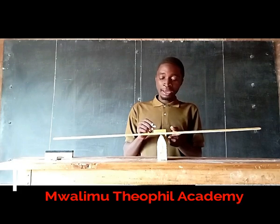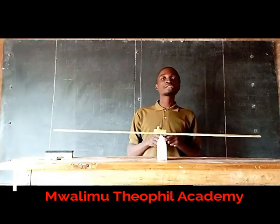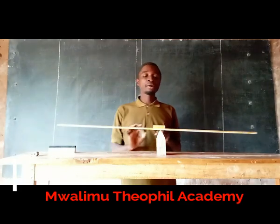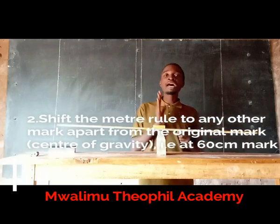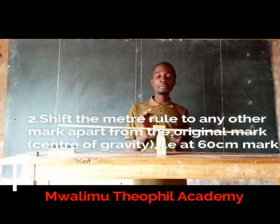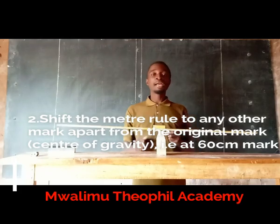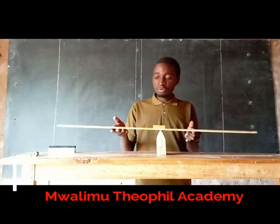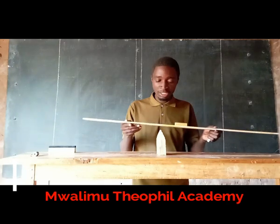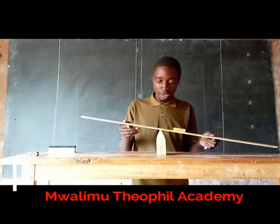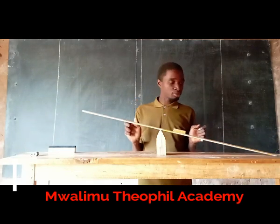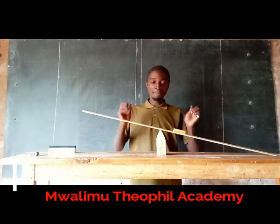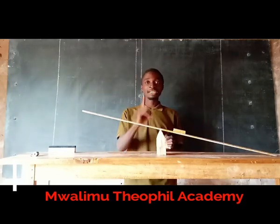Now we are through with the first step. Let us go to the second step. The second step: shift the ruler at any mark apart from the center of gravity, the balancing point. Now let us shift it to the 60 centimeter mark. As you can see after shifting to the 60 centimeter mark, the ruler tilts. After shifting it to the 60 centimeter mark, let us go to the third step.